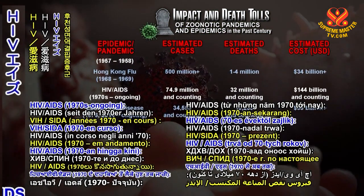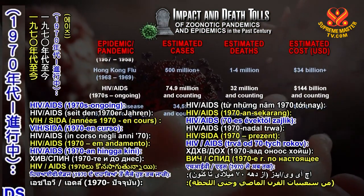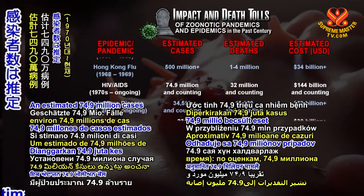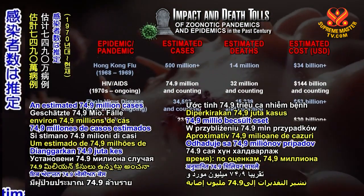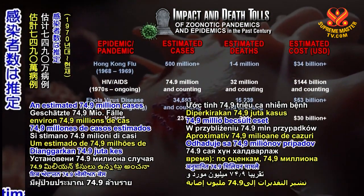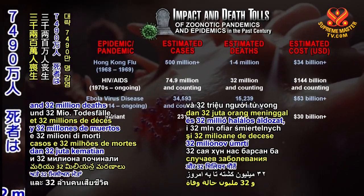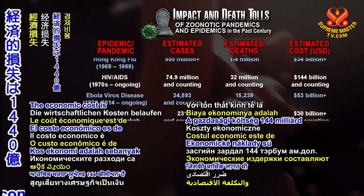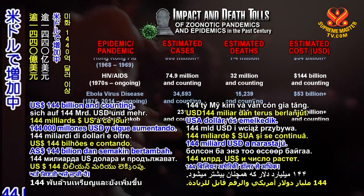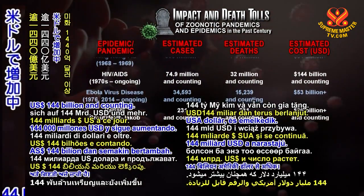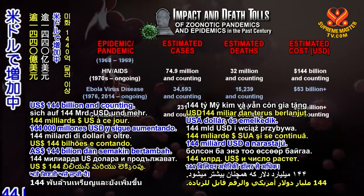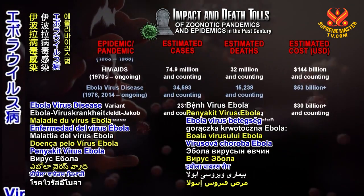HIV/AIDS, 1970s to ongoing: an estimated 74.9 million cases and 32 million deaths and counting. The economic cost is 144 billion U.S. dollars and counting.